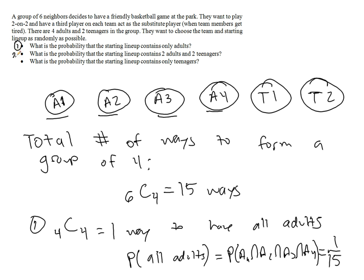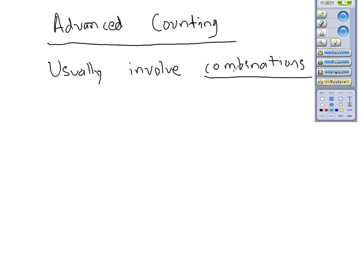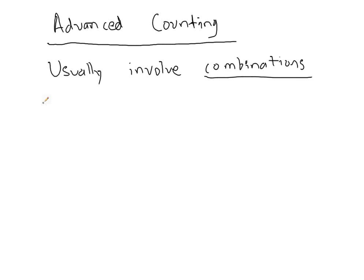In question two, we want to know the probability that the starting lineup contains two adults and two teenagers. So let's look at A1, A2, A3, A4. First, how many ways are there to draw two adults from this group of four?